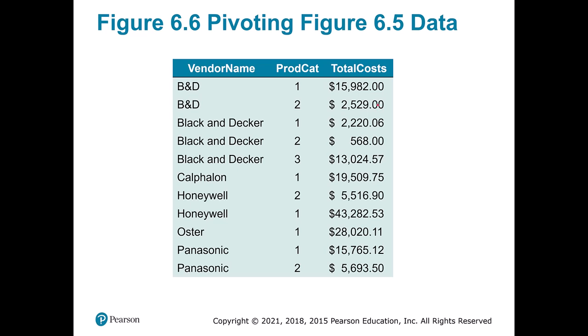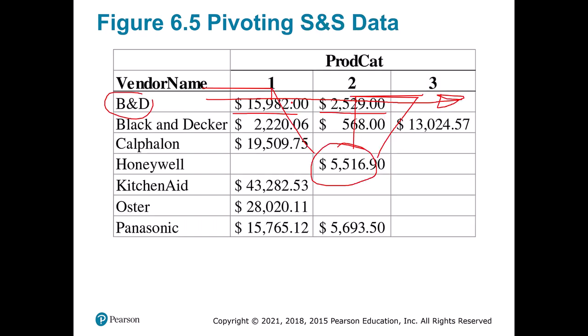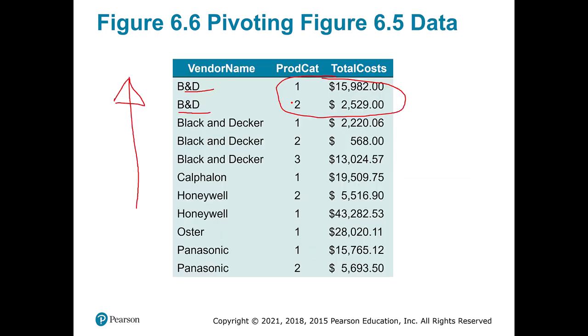Here's a better example — this is what's called tall data. Instead of going to the right like the prior format, now we go vertical. Black Indector has product category one, product category two, and BND shows up multiple times. Data in this tall format is so much easier to work with because it lets us do filtering, sorting, and data visualizations. Everything just gets a lot easier. So if you start with data in wide format, you have to get it back into this tall format.